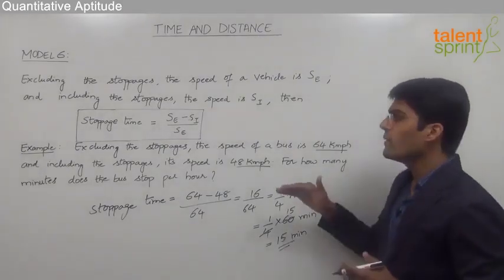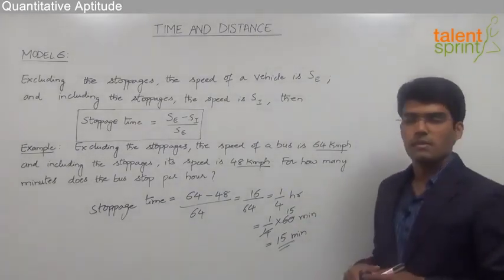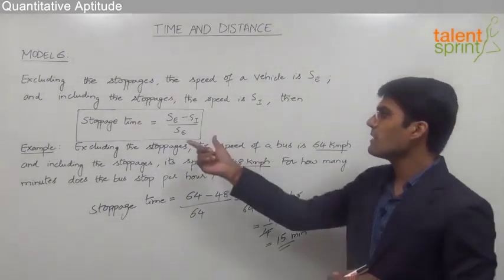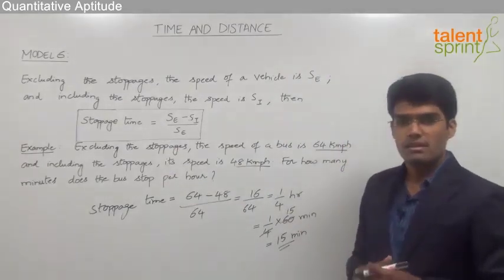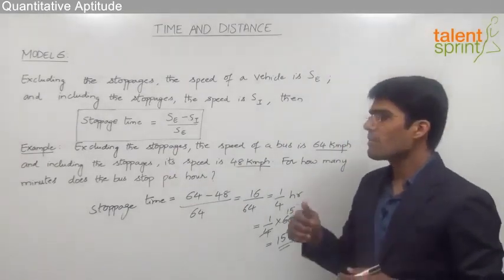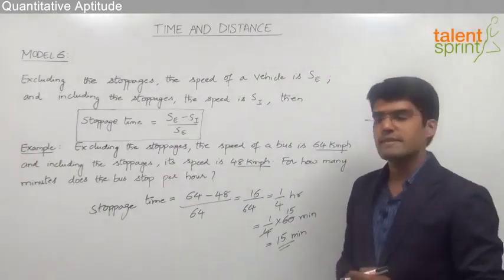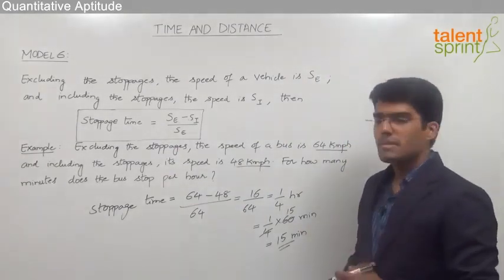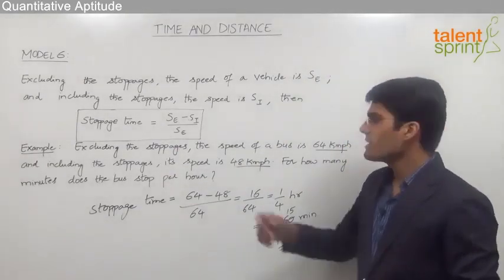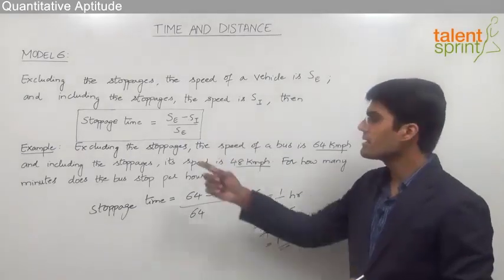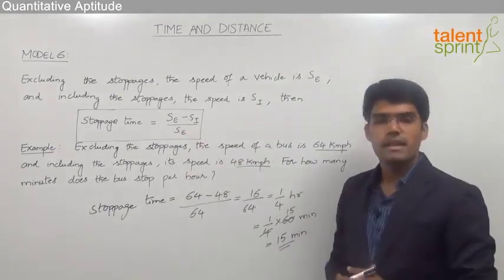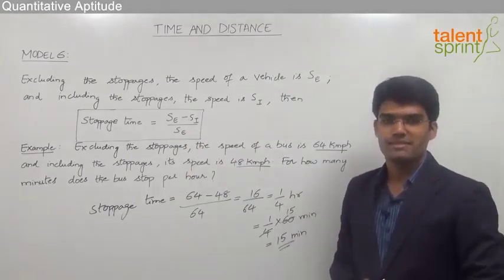This is how we solve this question using the direct shortcut formula. Remember: stoppage time is always speed excluding stoppages minus speed including stoppages, divided by speed excluding stoppages.